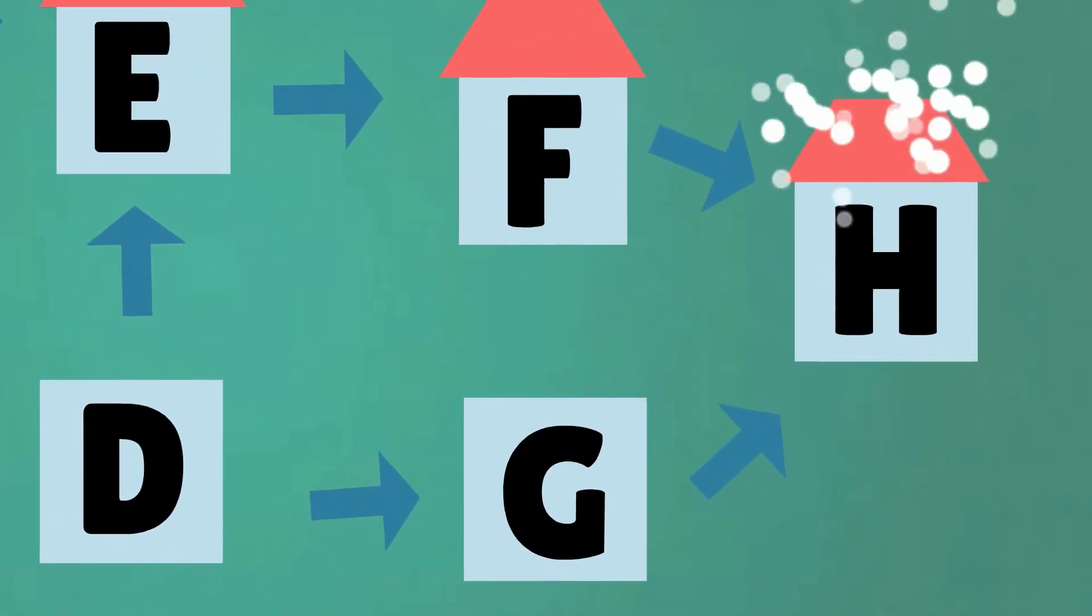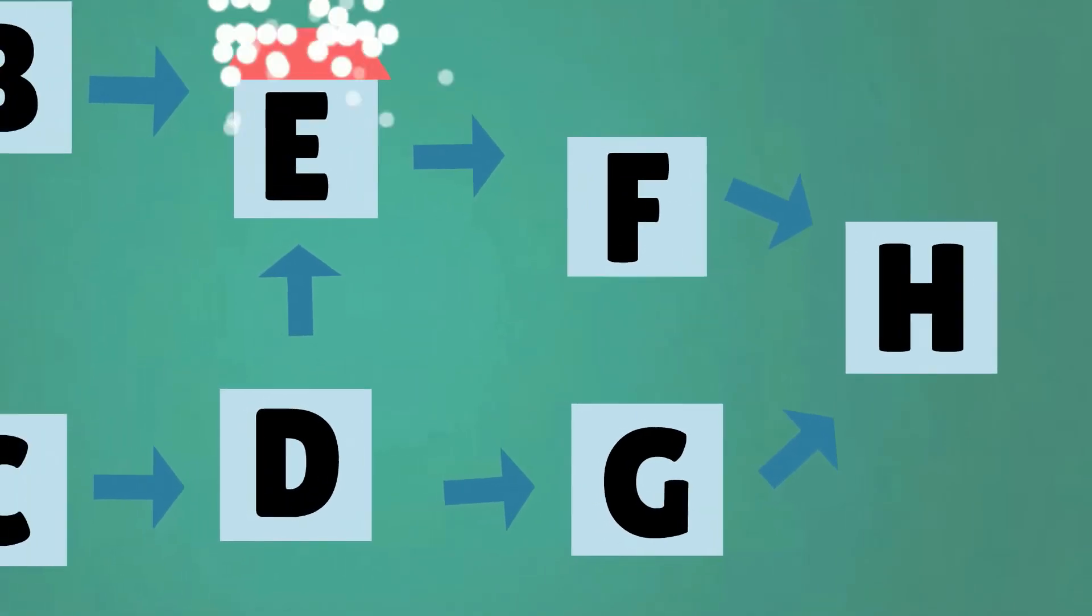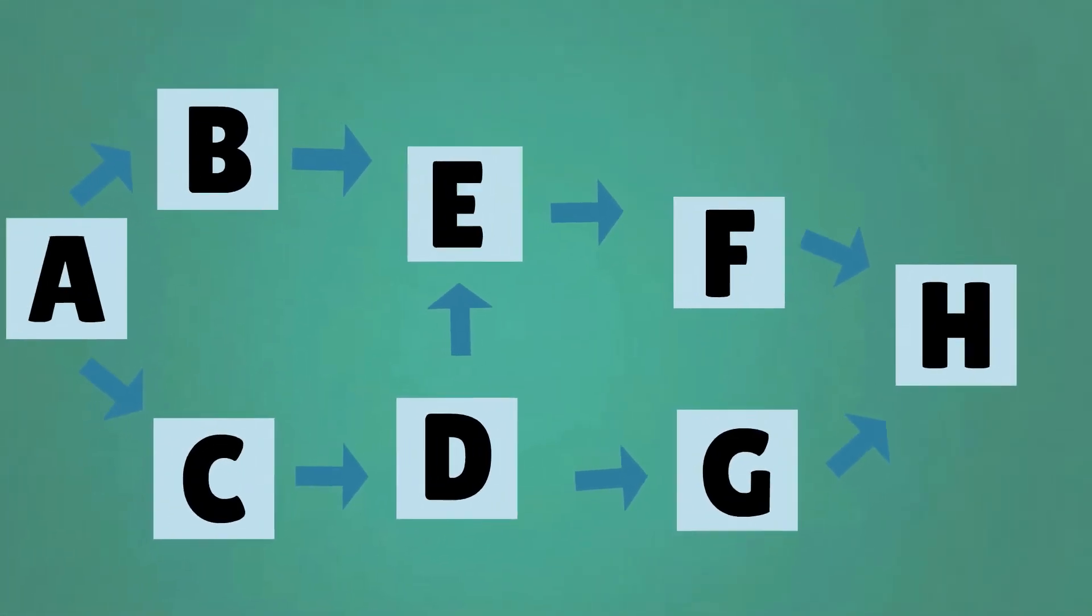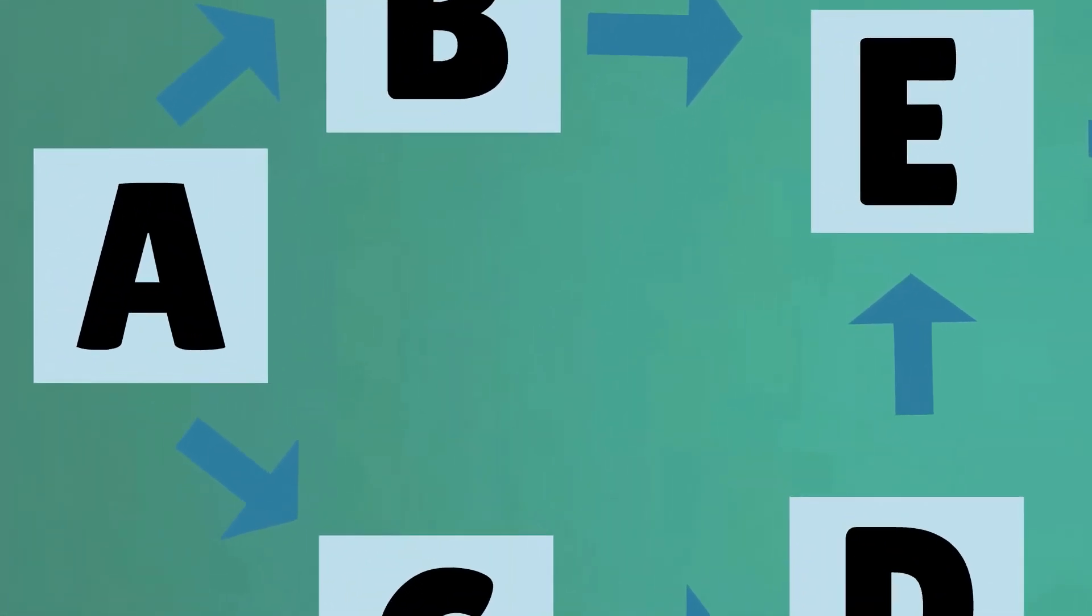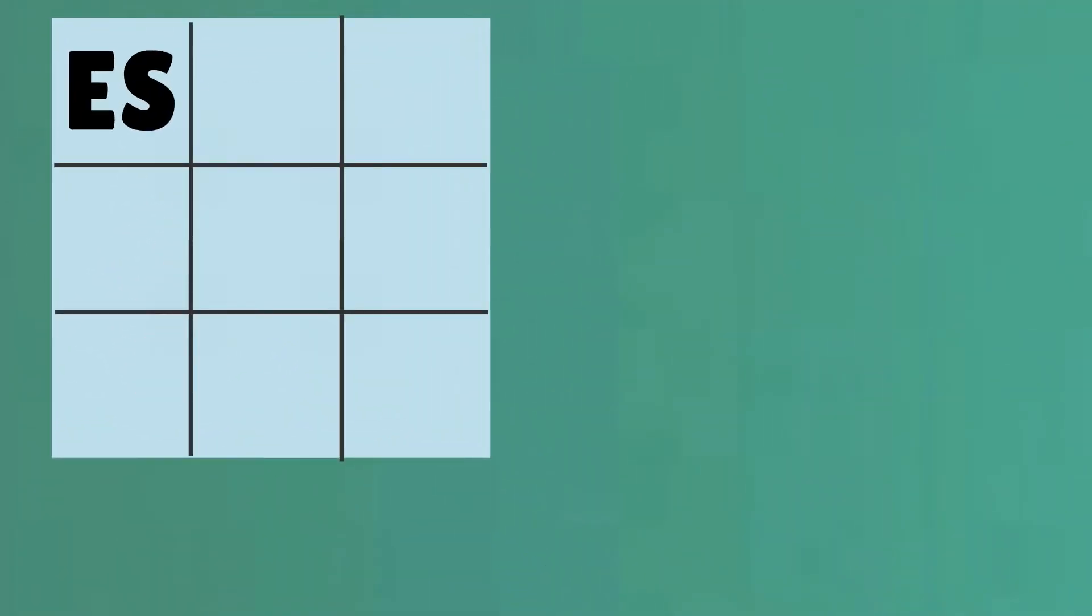When activity H is finished, the whole project, in our case the house, is also finished. Thirdly, every activity takes a known amount of time to complete. For example, in our case, a number of weeks.